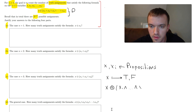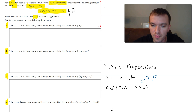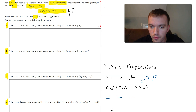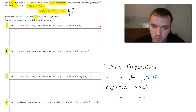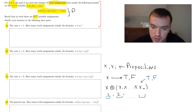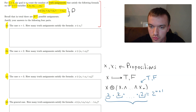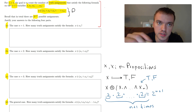Since each variable Xi can be true or false, and we have n+1 variables, you can think of each variable as a slot where we plug in 0 (false) or 1 (true). The question is: how many combinations of 0s and 1s can we plug in? For each variable we have two choices, and by the multiplicative law in combinatorics, that gives us 2^(n+1) total assignments.